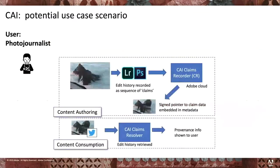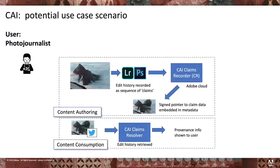We envision a system that helps a photojournalist user who creates an image upload that history to Adobe Cloud, creating a pointer to that history. When a user comes across an image on Twitter or Facebook and wants to know where it came from, they can upload it to our service to retrieve the provenance information for that image.